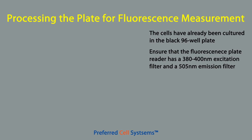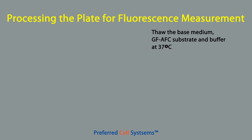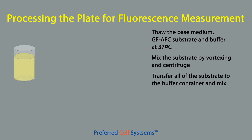Make sure your fluorescence plate reader has the correct filters for excitation and emission, and that the instrument is adjusted to the correct gain. Remove the base medium, substrate buffer, and the GF-AFC substrate from the freezer and thaw them at 37°C in a water bath. When the substrate has thawed, mix it by vortexing and centrifuge briefly to recover the complete volume. Transfer all of the substrate to the buffer container to produce a two-fold concentrated substrate solution. Mix thoroughly to dissolve; if the complete reagent is milky, this will dissolve on further mixing.